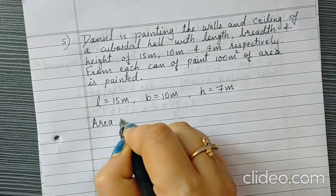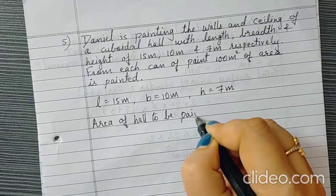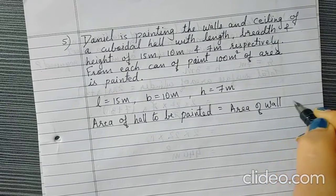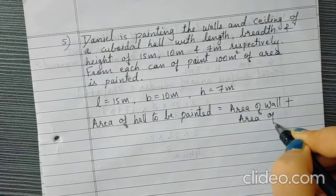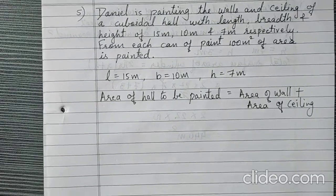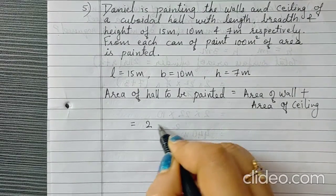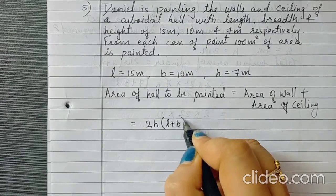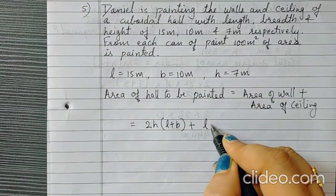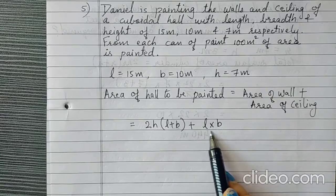So, area of hall to be painted will be equal to area of walls plus area of ceiling. Now the formula to find area of walls is 2H into L plus B. And to find ceiling area we need L into B, because ceiling will be rectangular in shape. So the area of rectangle is L into B.